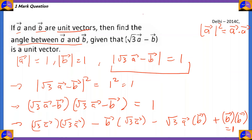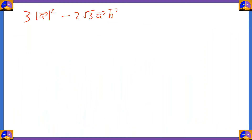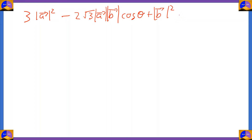Since this is a dot product, we write the magnitude form: minus 2√3 times modulus of vector a times modulus of vector b times cos θ. And then we have modulus of b bar squared at the other end, since b bar · b bar = modulus of b bar squared. The right hand side equals 1.